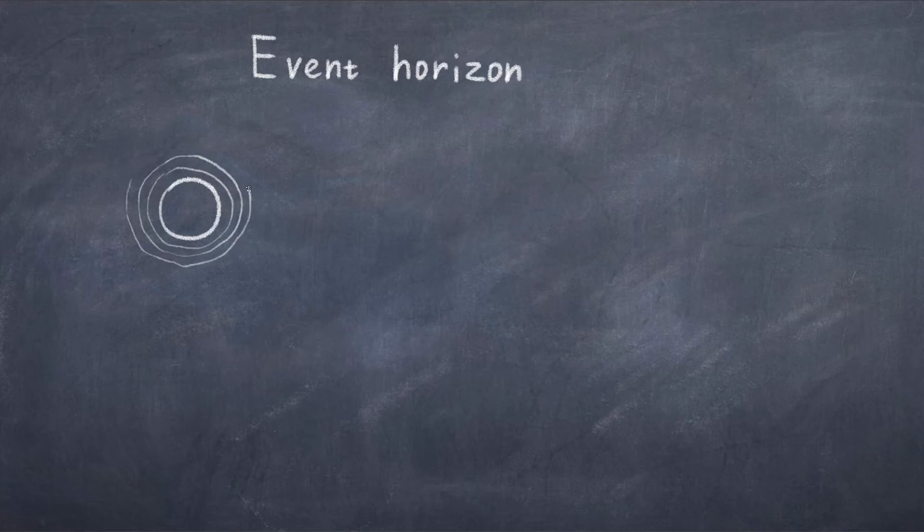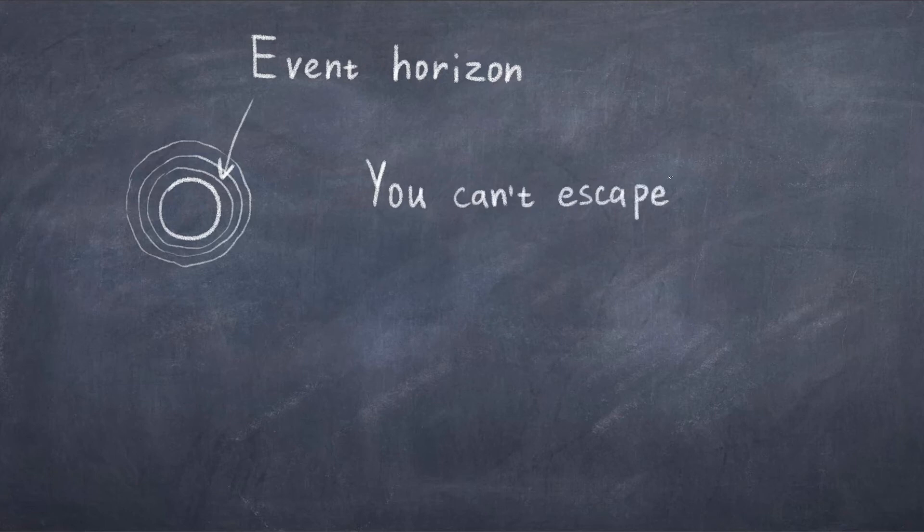This is also why we see black holes as black objects. Stars for example send out light, so we see them as bright objects. Black holes on the other hand suck in everything, including light, because the light bending is so extreme that even light cannot escape.